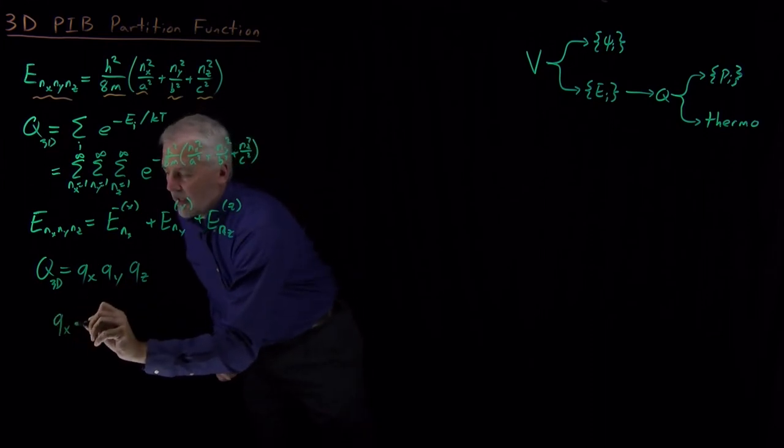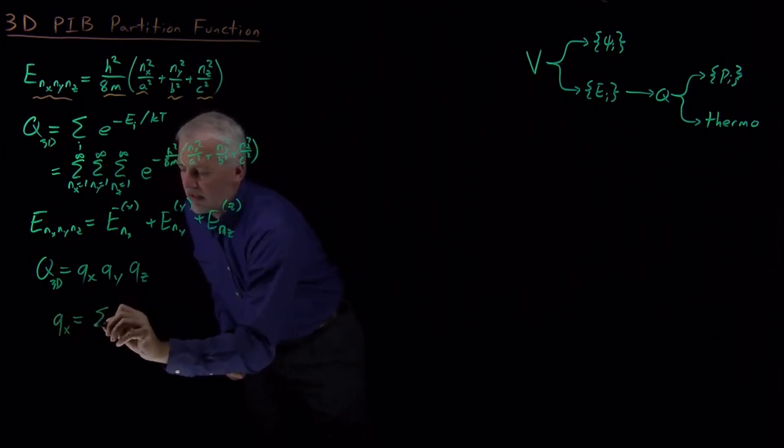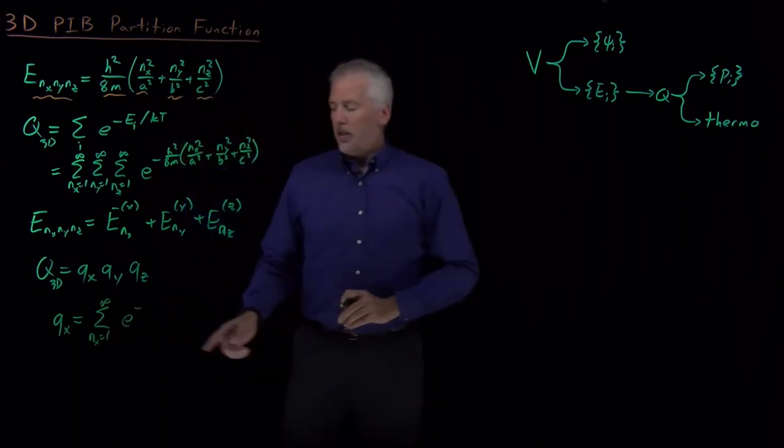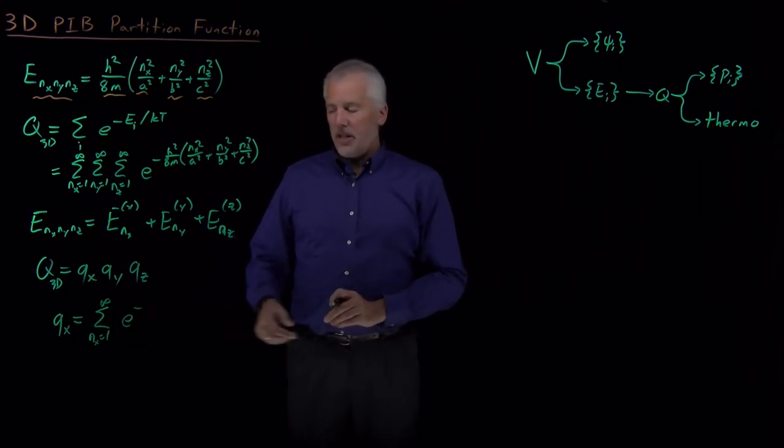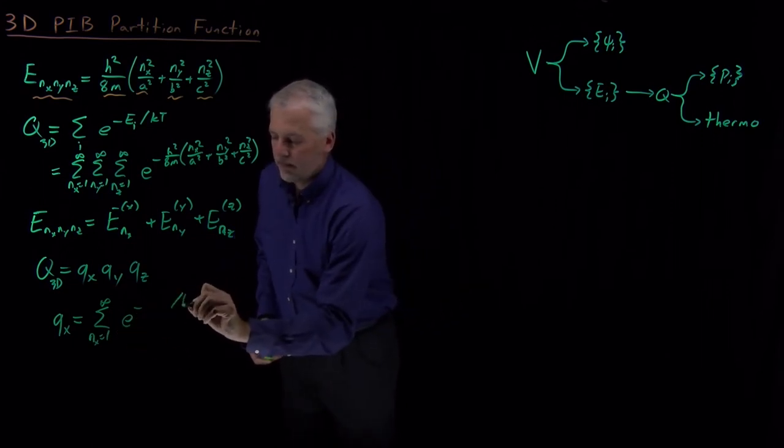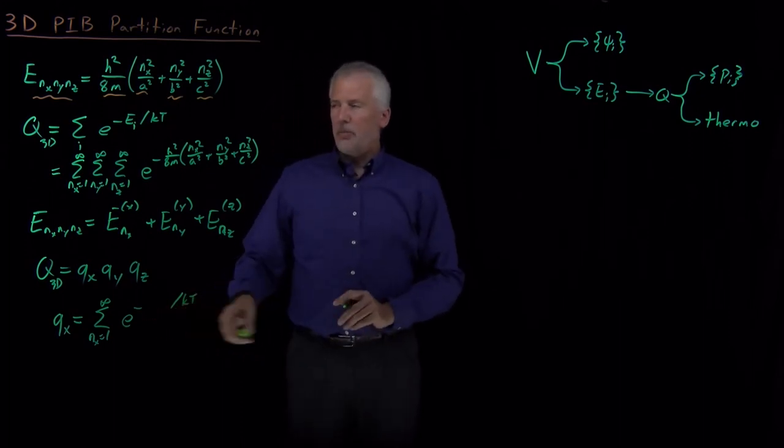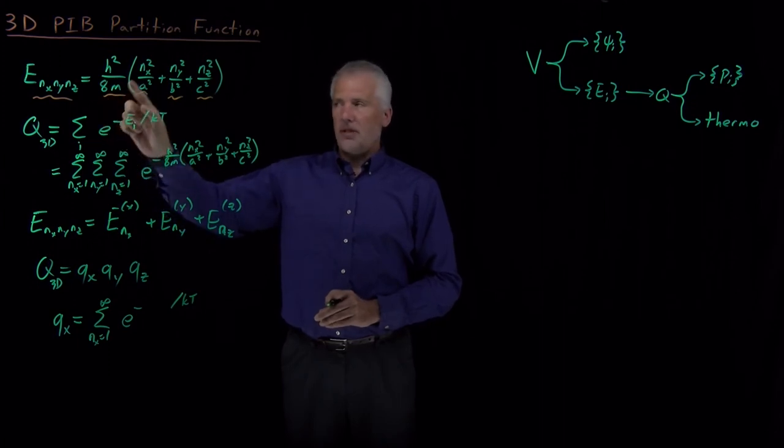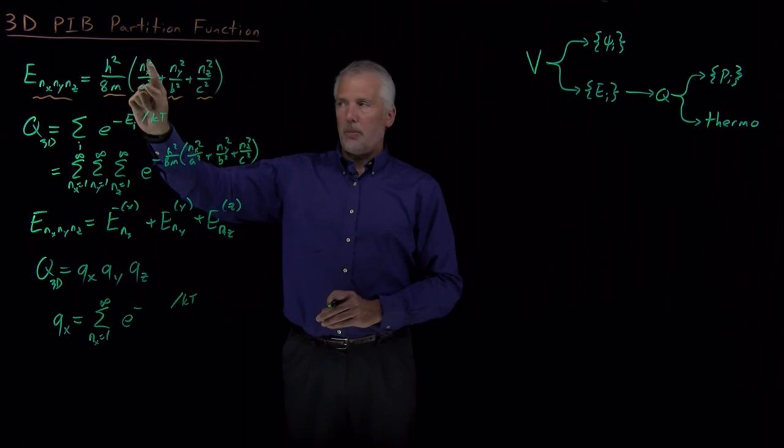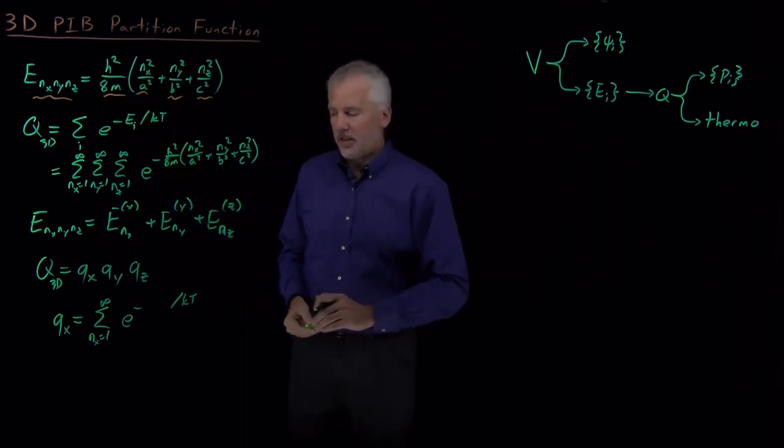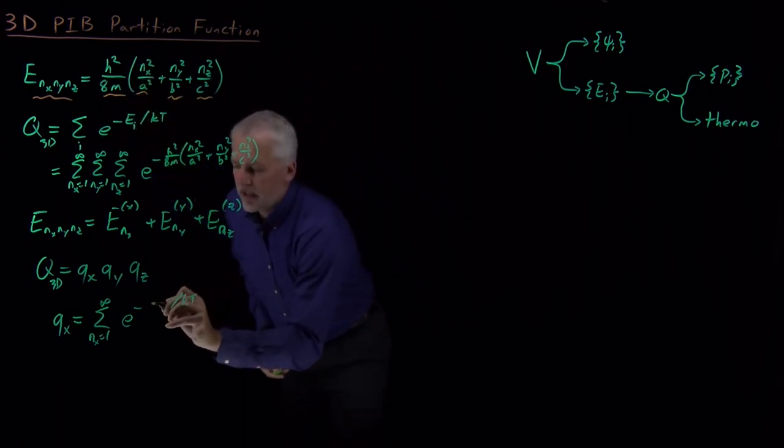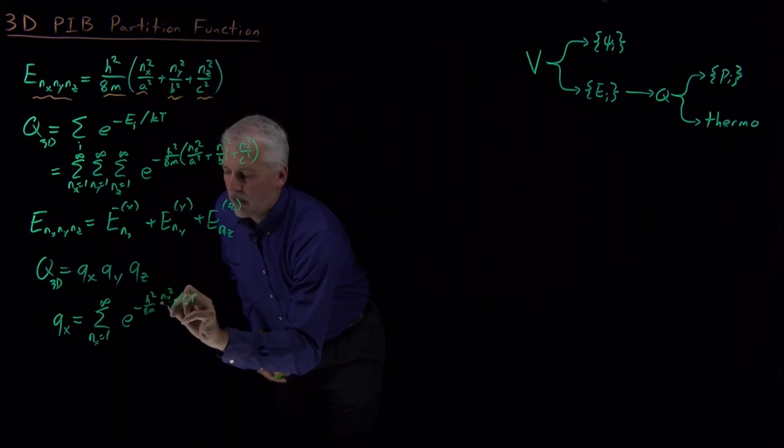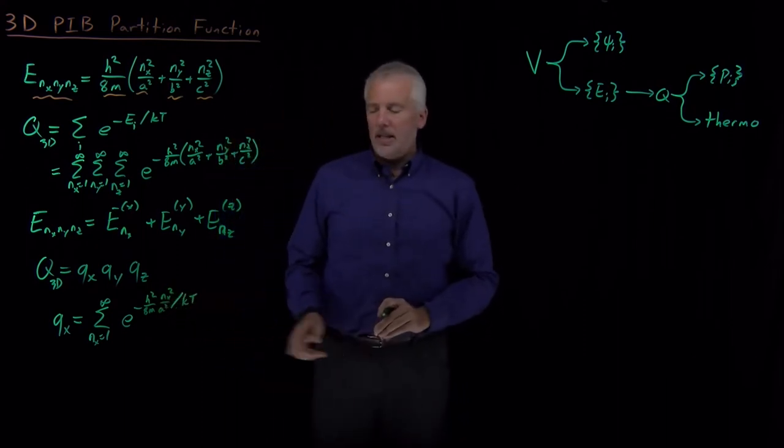And just to make that clear, what I mean by q sub x here is the sum of the Boltzmann factors e to the minus energy over kt, where the energy that I'm talking about here is not the full three-dimensional particle in a box energy, but just the piece that comes from the x component. So it's the constants times the n sub x, the quantum number in the x direction, and a, the box length in the a direction. So that would be e to the minus h squared over 8m, nx squared over a squared, all divided by kt in the exponent.